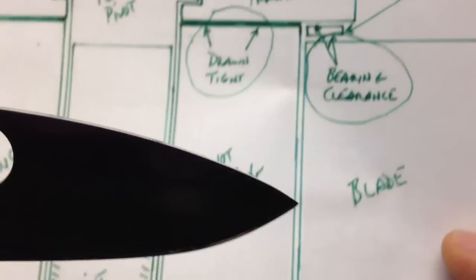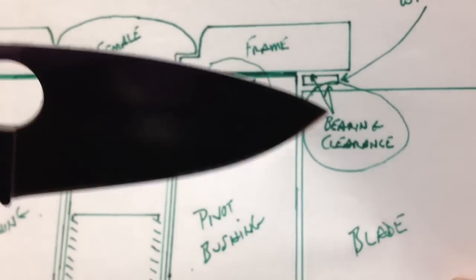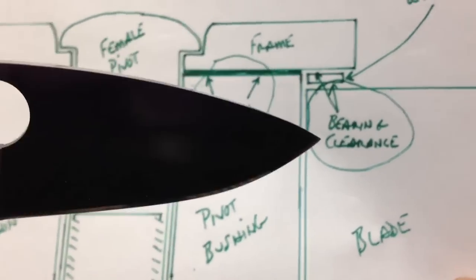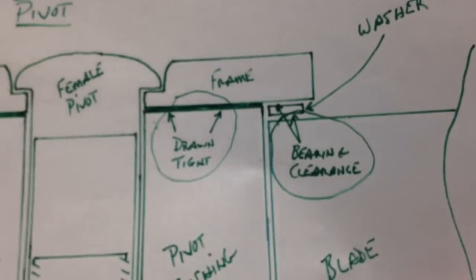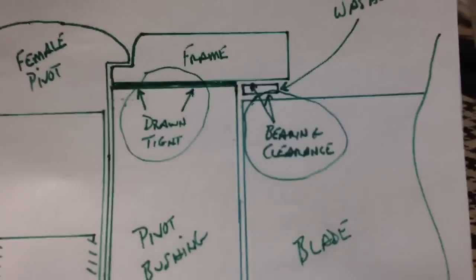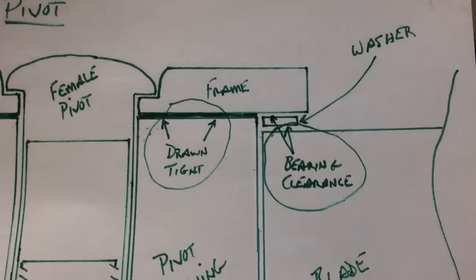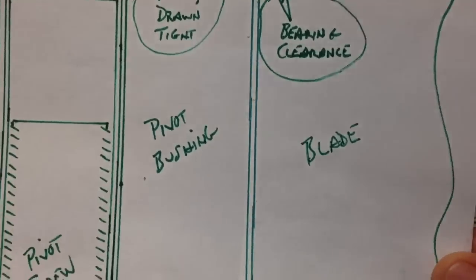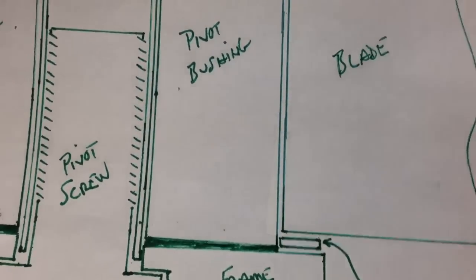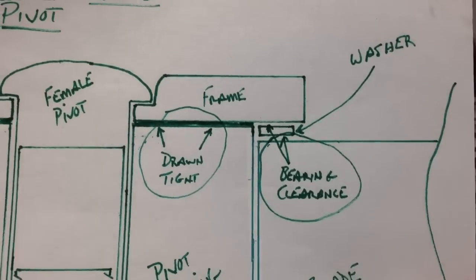The blade then is a reduced thickness and then the washers take up that space with a precisely machined bearing clearance. So every Sebenza 21 and back is going to be precisely fit tightly assembled from the factory so the blade swings with specified tension.